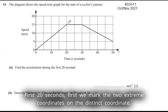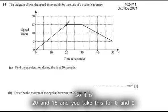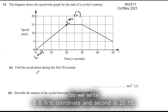For the first 20 seconds, first we mark the two extreme coordinates. The distinct coordinates are: the first coordinate is (0, 0) and the second is (20, 15).